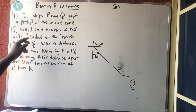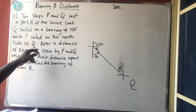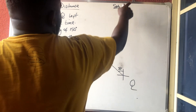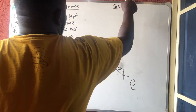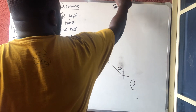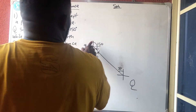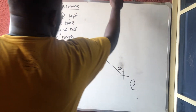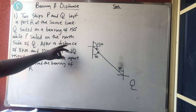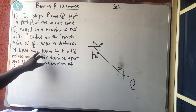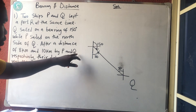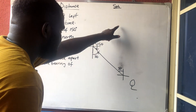P sailed on the north side of Q, which means P was going this way. We don't know where P will stop because this is the north side of Q, and they will meet somewhere. They said after a distance of 8 kilometres by P and 10 kilometres by Q.